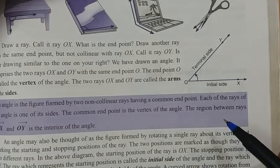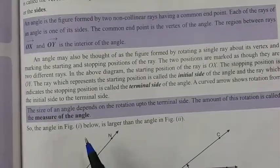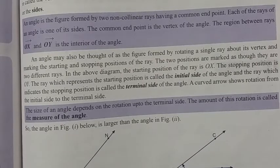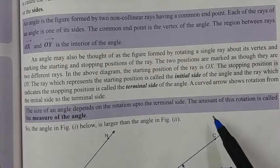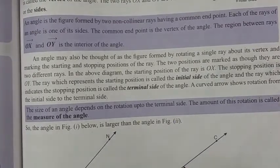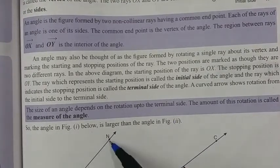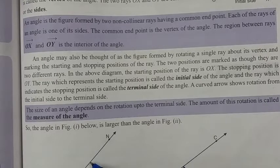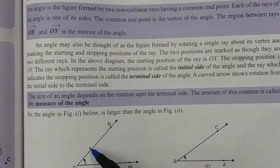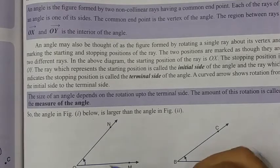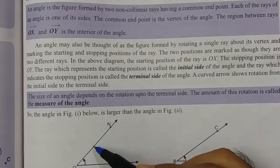Now, how do we measure an angle? The size of an angle depends on the rotation up to the terminal side. The amount of this rotation is called the measure of the angle. This is the initial side, and this is the terminal side. So from the initial to the terminal side, the rotation that occurs — that movement — is what we call the measurement. The distance of the angle: this is the process of measuring an angle. It means we go from the initial side toward the terminal side.